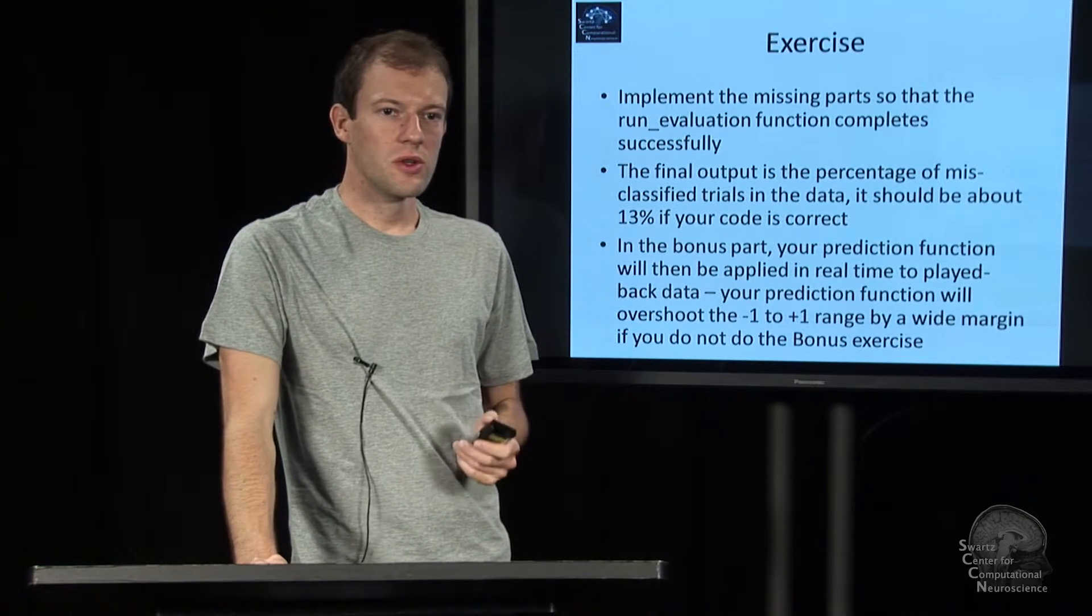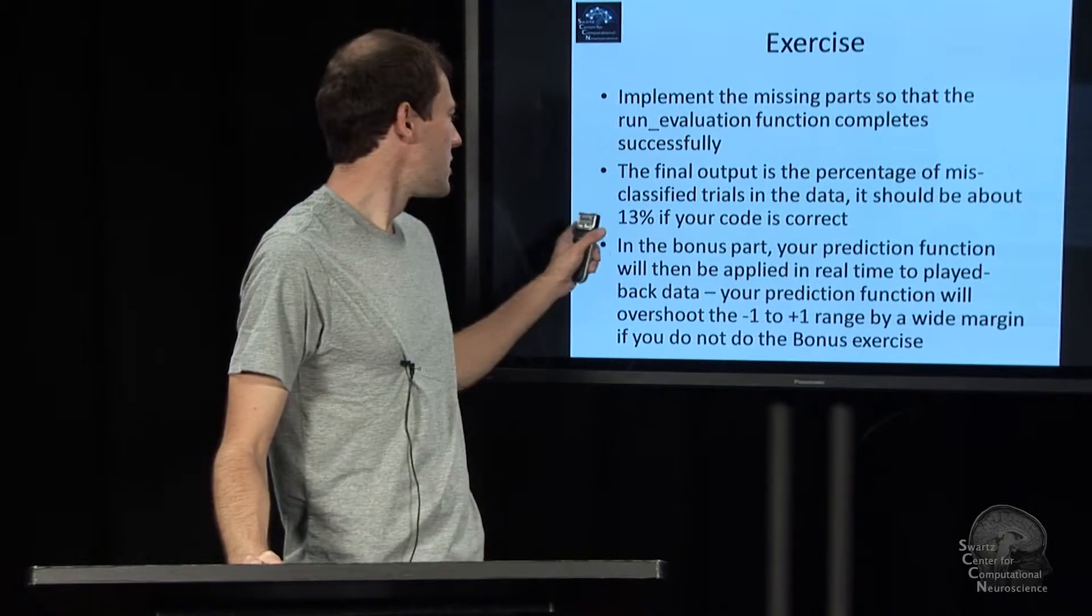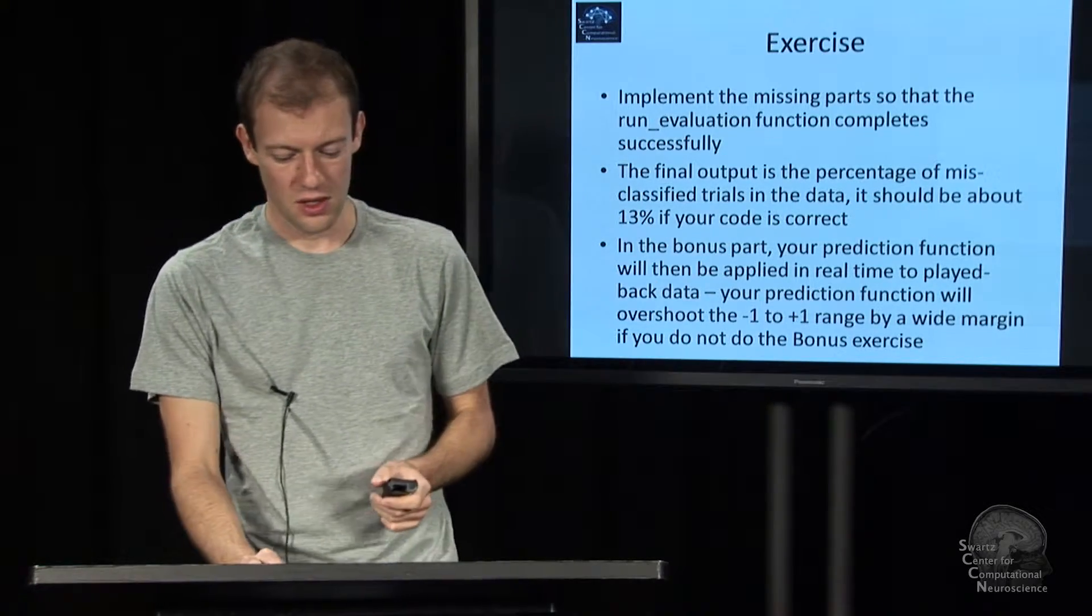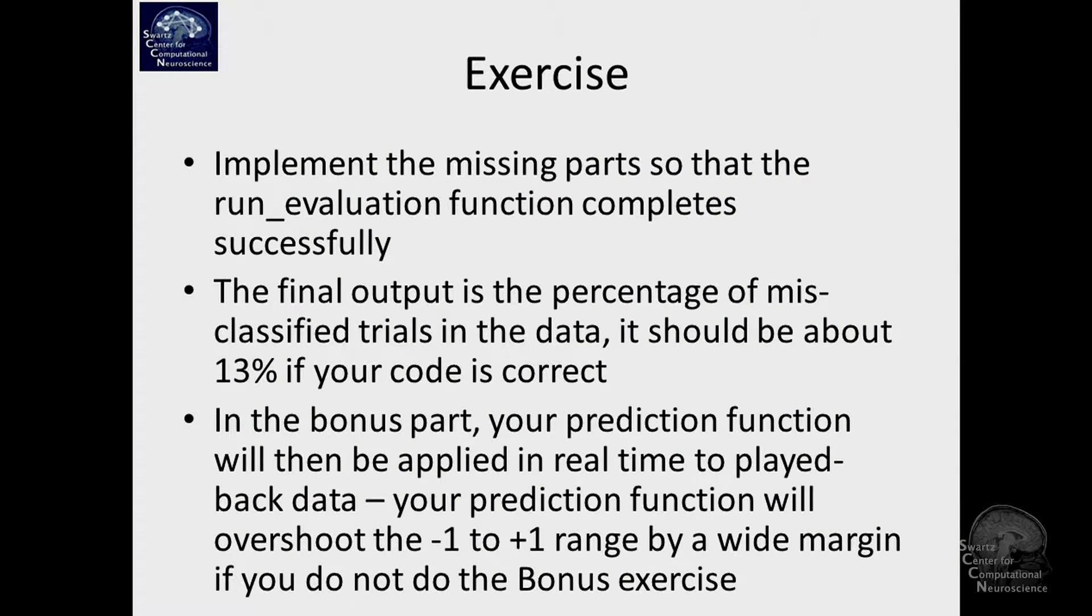When you're done with that, what you should get from the function is a printout which should read 13% misclassification rate, if you get it all right, or something in that ballpark. And secondly, if you got the rescaling correct, you will see this online graph.